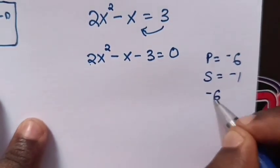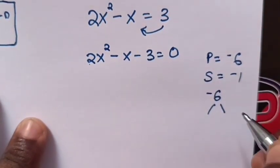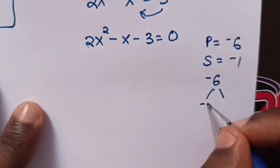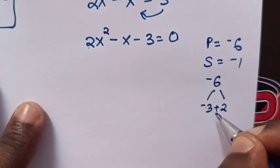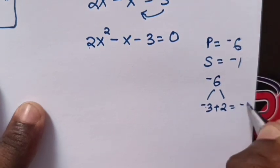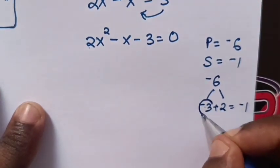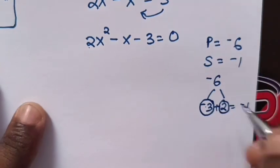Now to get negative 6, it means you multiply the factors which is negative 3 and 2, whereas the sum of these factors is negative 1. So our factors are negative 3 and 2.